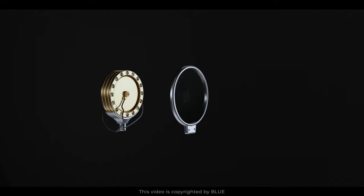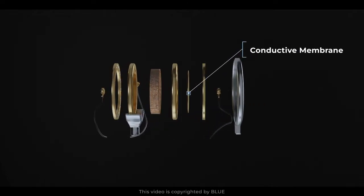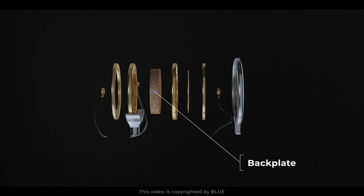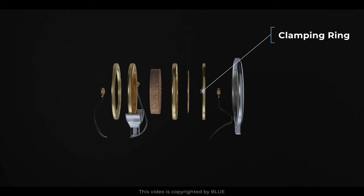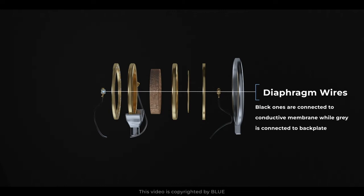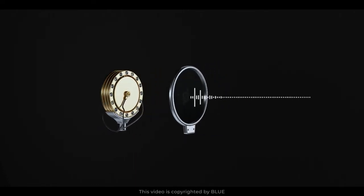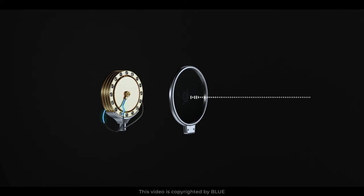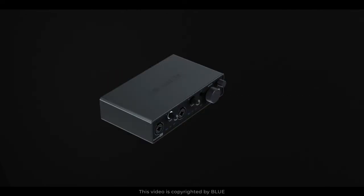A condenser microphone capsule is basically a stretched conductive membrane suspended above a fixed conductive plate. This membrane and backplate are the two key components that define the mic as a condenser. There is a clamping ring, diaphragm, and wires — the black ones are connected to the conductive membrane while the gray one is connected to the backplate. When sound waves strike the diaphragm, it causes it to vibrate. As the diaphragm moves back and forth, it changes the electrical field between the diaphragm and backplate, which generates an electrical signal that corresponds to the sound.